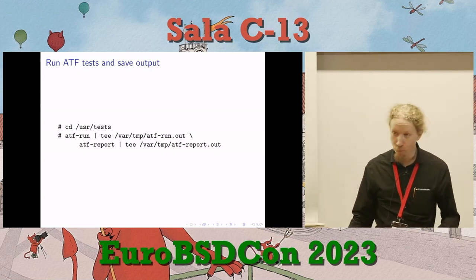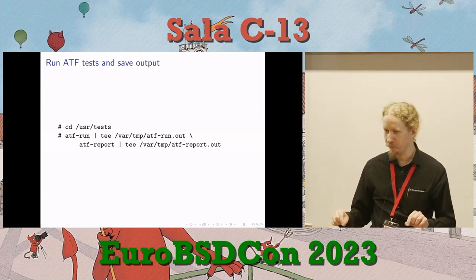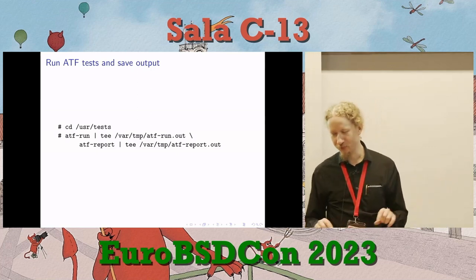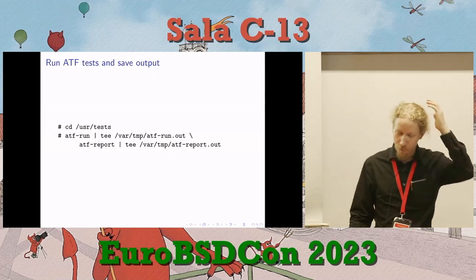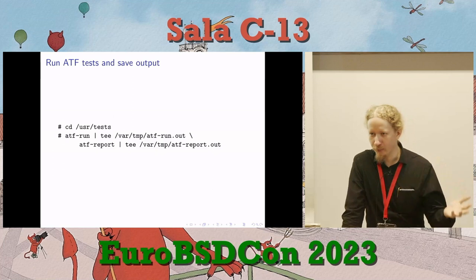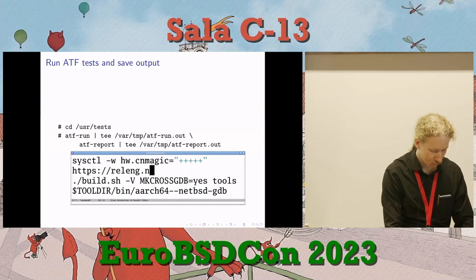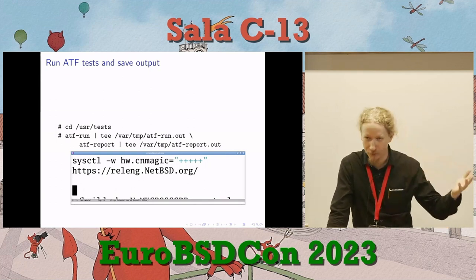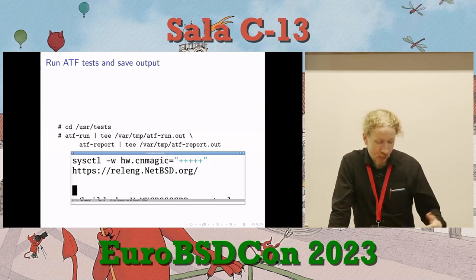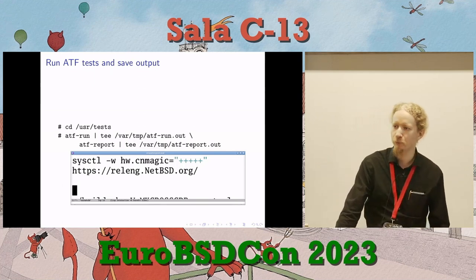I often tee the output to a file. The atf-run output file is very verbose but has nice things like automatic stack traces of test programs that crashed. The atf-report output file has just a summary of all test results, with a one-liner per failure saying things like 'test program crashed with SIGSEGV'. Then you go back to the atf-run output for details. We also do automatic runs — if you look at releng.NetBSD.org and look at the automatic test suite runs, you'll find examples of the ATF test suite output.